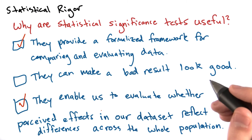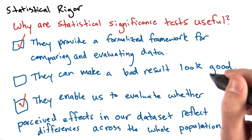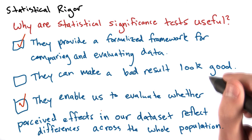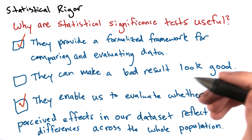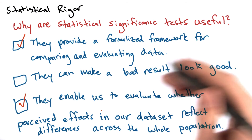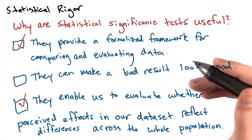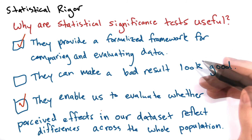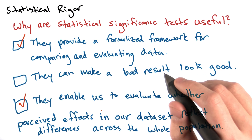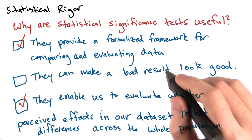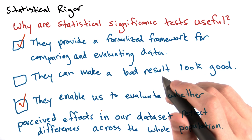Unfortunately, a bad result is not going to look any better or worse as a result of using a statistical significance test. If our data is bad or there's really no difference between our two samples, we're not going to be able to undo that with a test. It is possible that different tests might give us different results, so the really important thing is that you need to use the right test in the right situations. Why don't we talk a little bit about how we might actually run a statistical significance test.